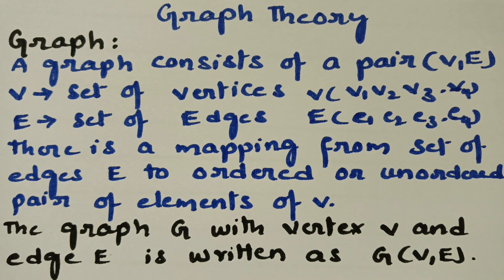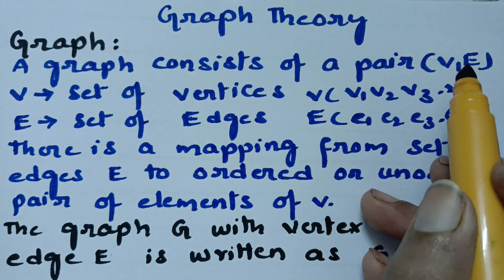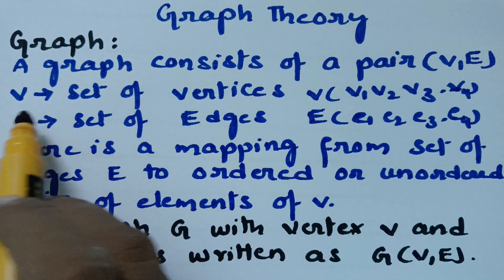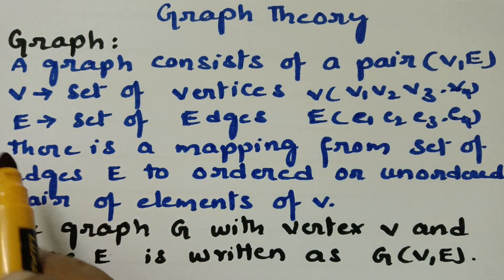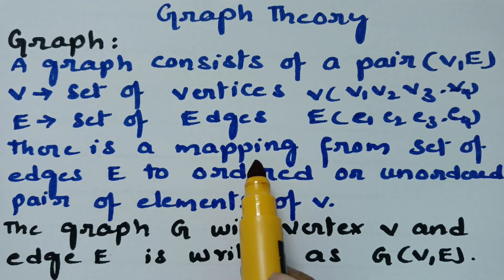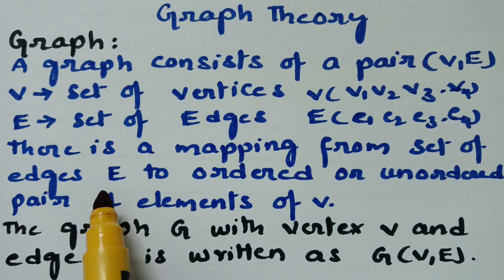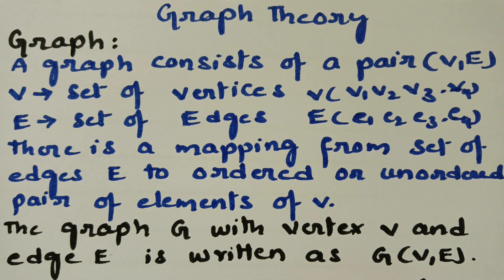The first definition is graph. A graph consists of a pair V, E, where V is the set of vertices — V1, V2, V3 and so on — and E is the set of edges — E1, E2, E3 and so on. There is a mapping from the set of edges E to the ordered or unordered pair of elements of V. The graph G with vertex set V and edge set E is written as G(V, E).